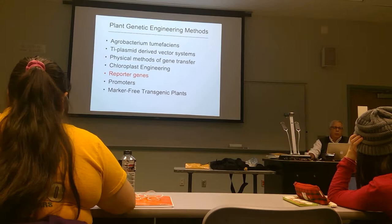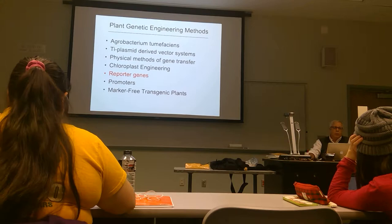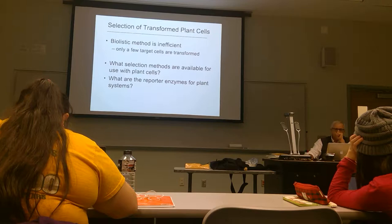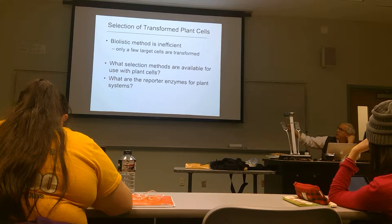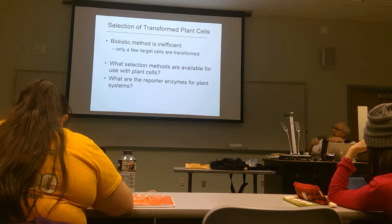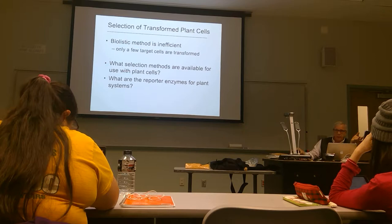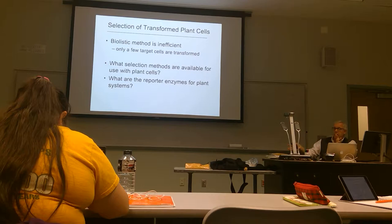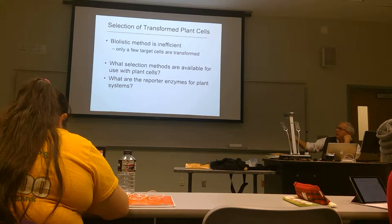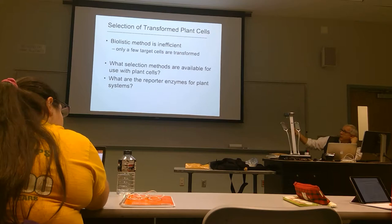Our next topic is reporter genes. The biolistic method as well as the Agrobacterium method are pretty inefficient — only a few target genes are going to be transformed. So you often want a way of being able to select for the cells that have been transformed. It's like antibiotic resistance with bacteria: you plate them on media that contains the antibiotic, and the one that has the resistance gene will grow and form colonies. It's basically the same thing for plant systems.